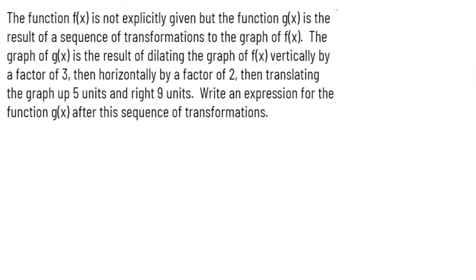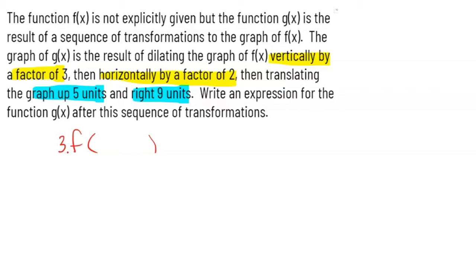In this next problem, we have a generic function f(x) with several transformations described. First, we have a vertical dilation by a factor of three. Then we have a horizontal dilation by a factor of two. Then we're gonna move the graph up five units and then to the right nine units. Thinking vertically first — since vertical is easier because it doesn't lie to you — we'll have a vertical dilation by a factor of three, multiplying the outside of the function by three. That's my a value. Then it goes up five units, so that's a plus five on the outside.